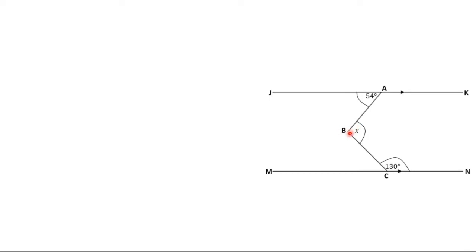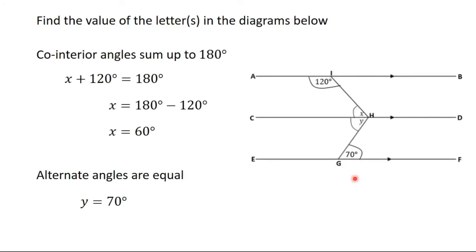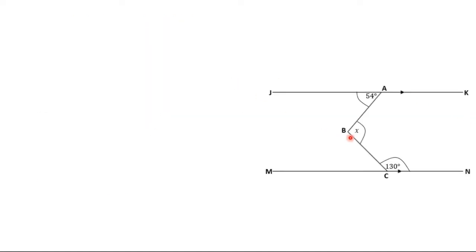The transversal doesn't continue straight through to the other parallel line. Whenever you have this type of question, what you have to do is introduce a helping parallel line — an imaginary auxiliary line that will help you solve the question. It was not in the original diagram, but you introduce it. In the previous video, we had two parallel lines and then a third line in the middle — that is the same concept you apply here.